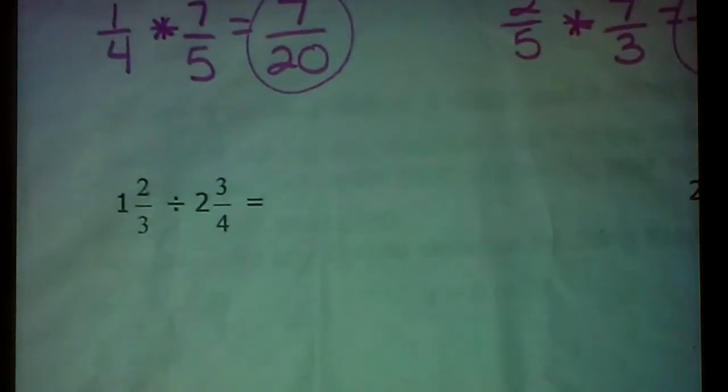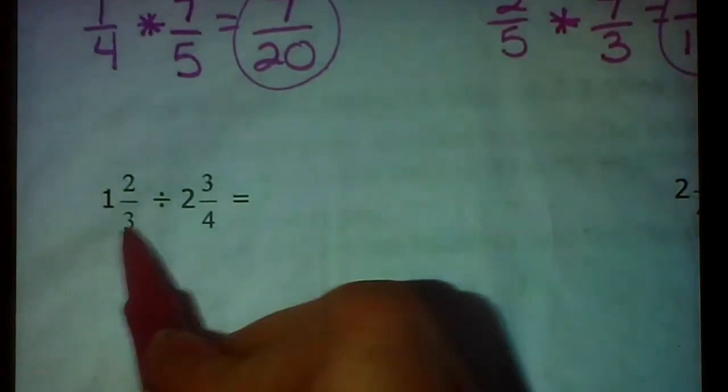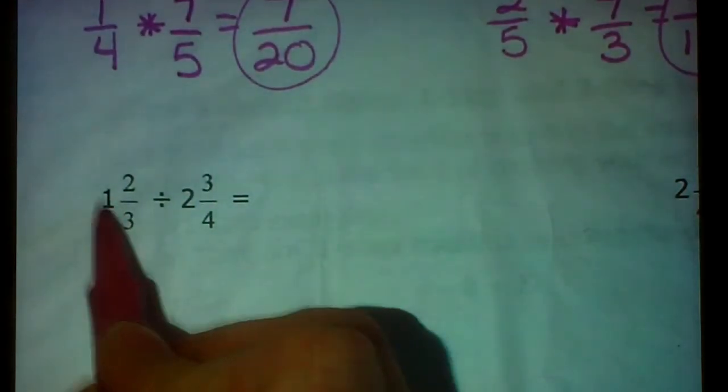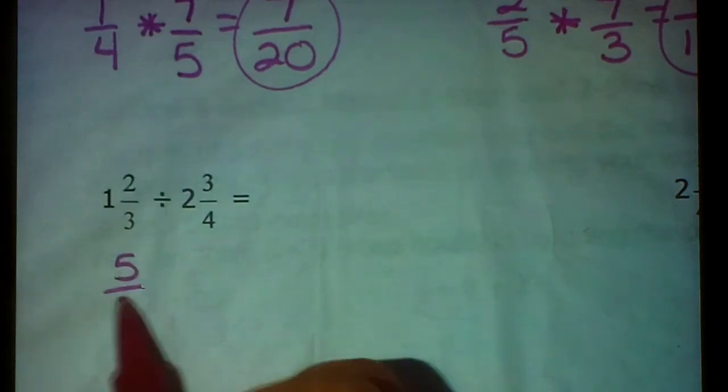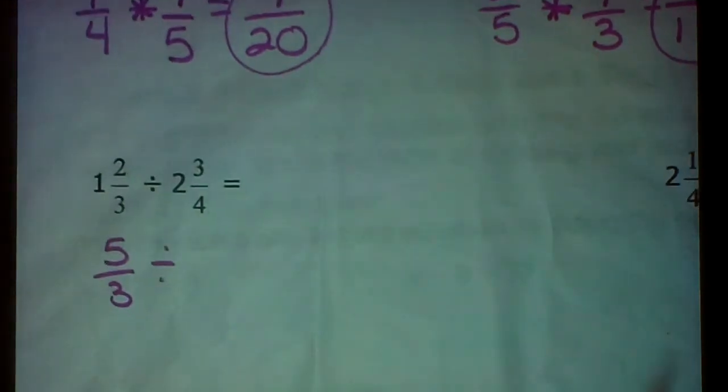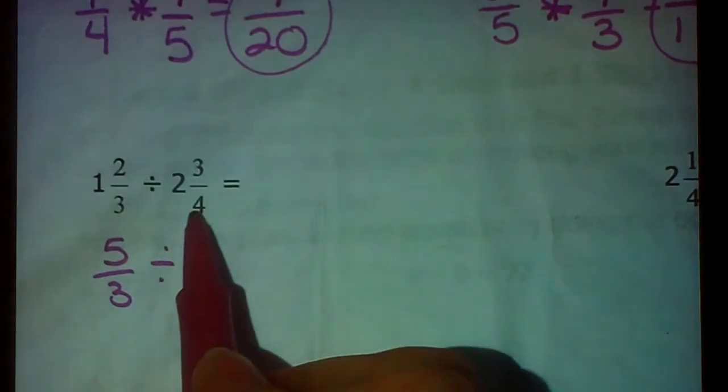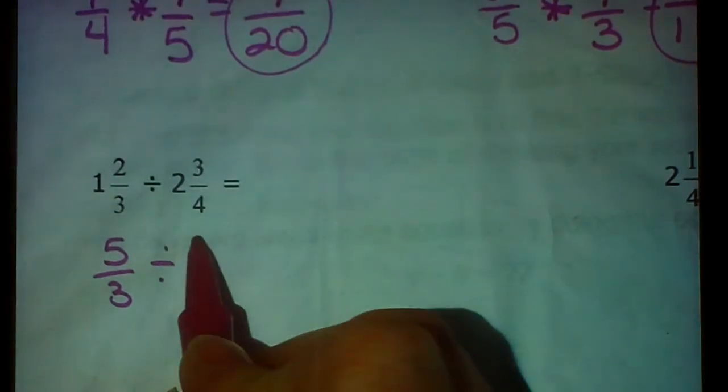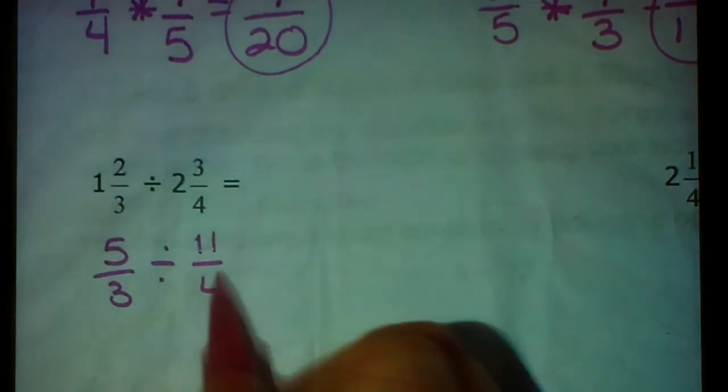Alright, look at our next ones. Again, we have mixed numbers. We need to change these to improper fractions first. So 3 times 1 is 3. Plus 2 more is 5 thirds. I'm not going to do any switching just yet. I just want to change these to improper fractions. 4 times 2 is 8. Plus 3 more is 11 fourths.